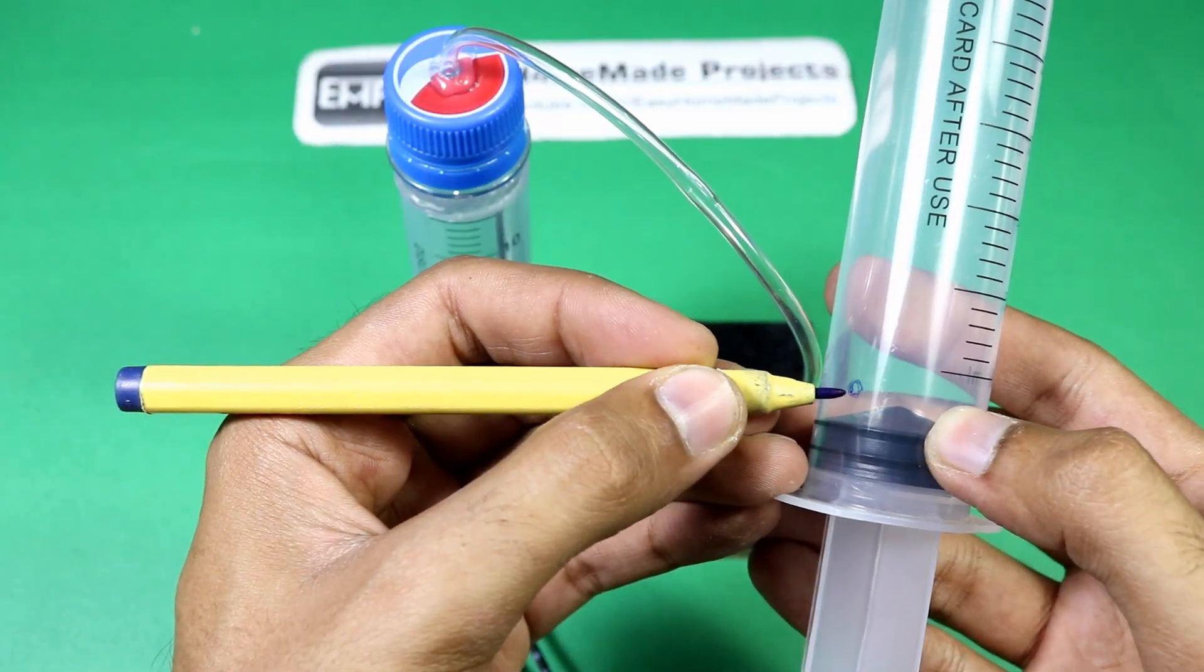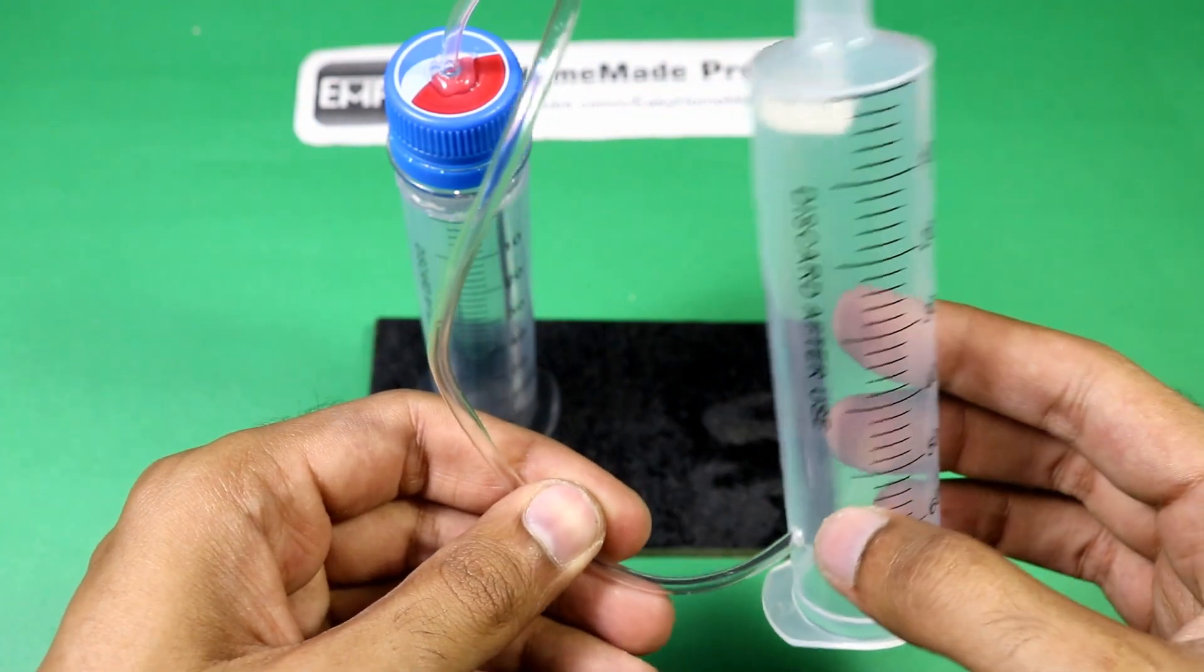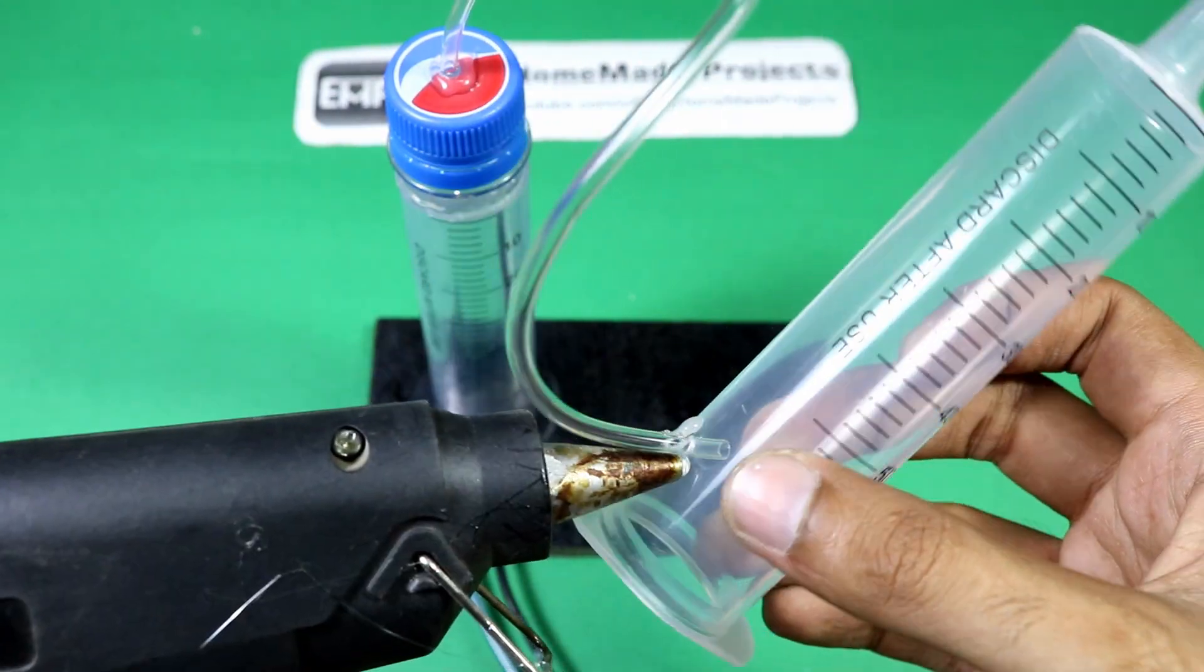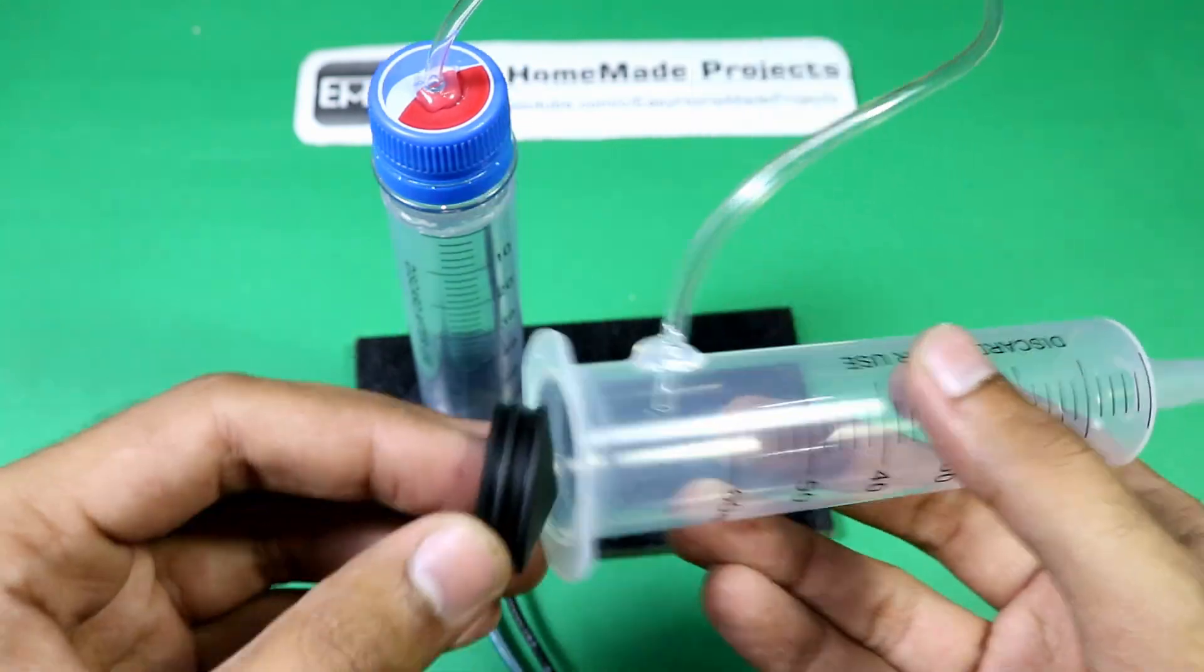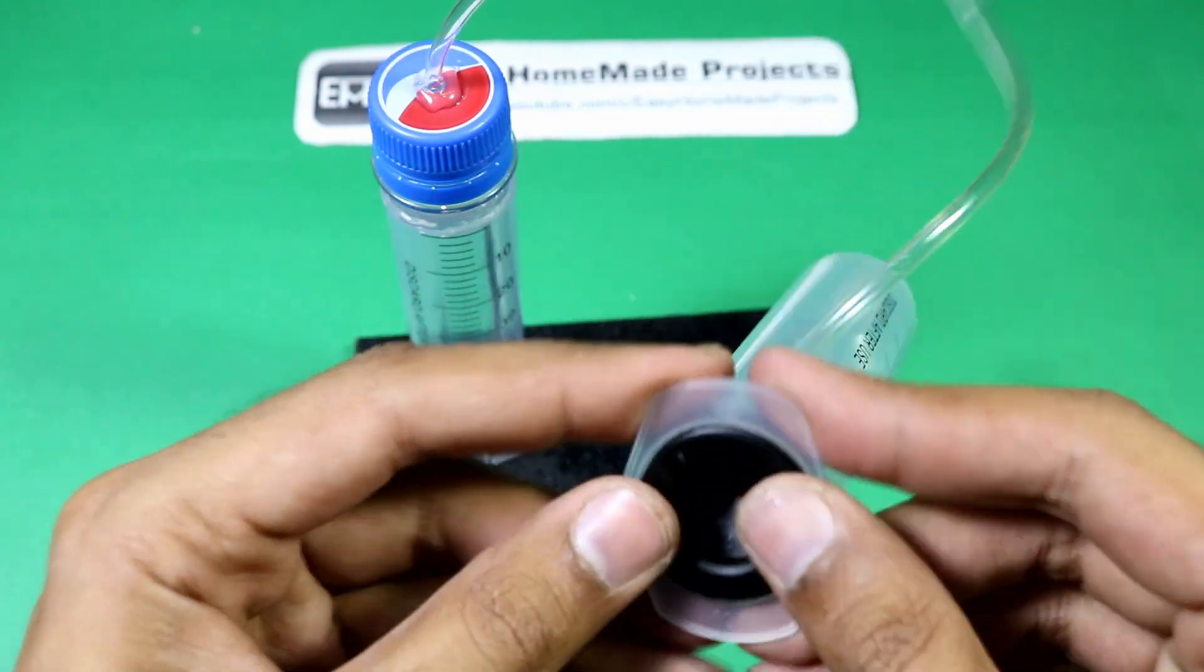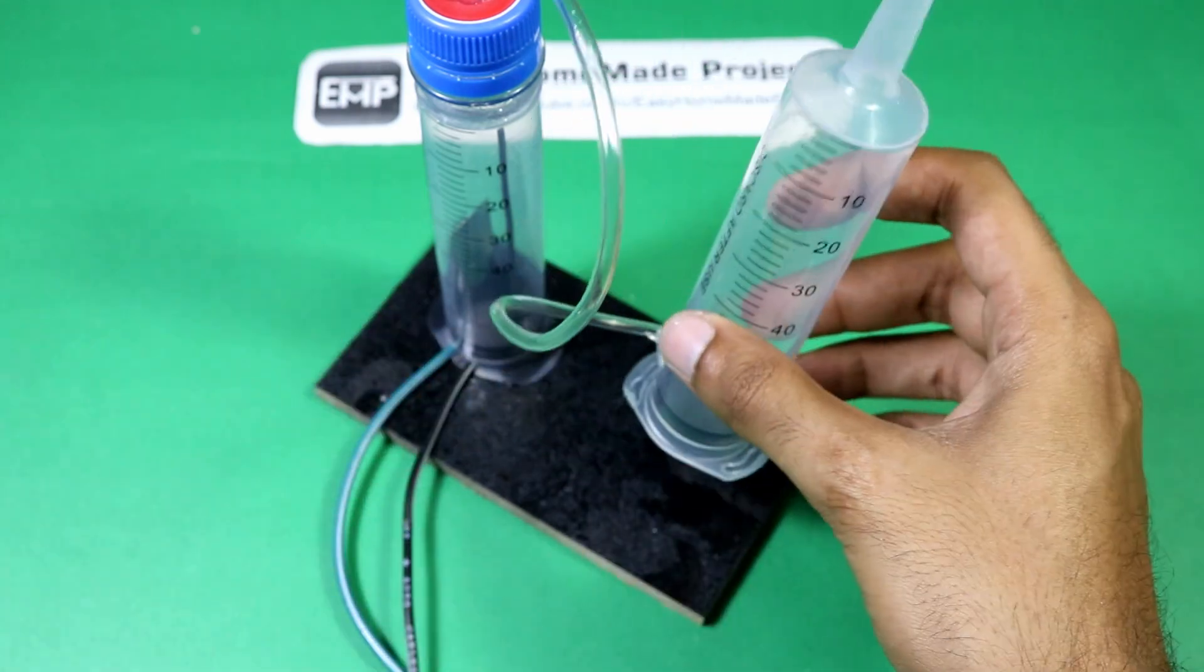Now make a three millimeter hole near the bottom of the second syringe, insert the other end of the tube in it, and also fix it using some glue. Close the bottom using the rubber piston and also fix it on the base.